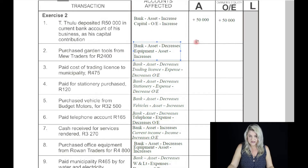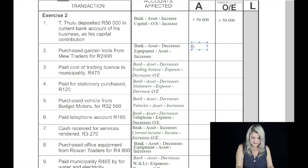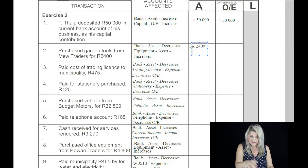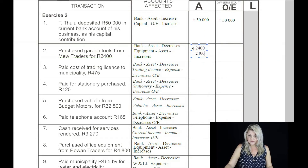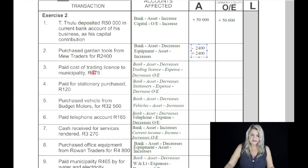So what will happen in our accounting equation? The bank decreases by 2,400 Rand, and the other asset increases by 2,400 Rand. The overall effect is zero, because we paid money out but we gained another asset. So the overall effect is actually zero — there was no change in the accounting equation.